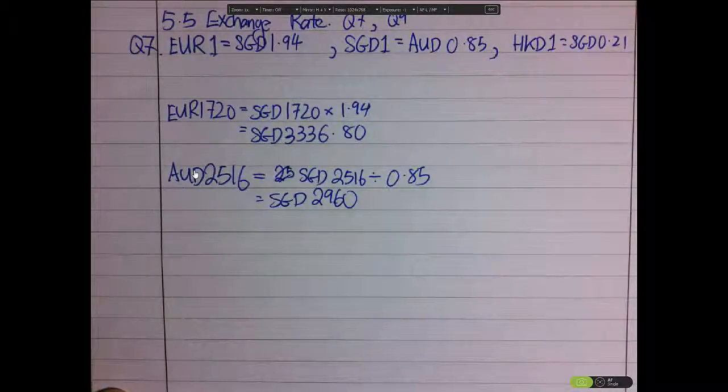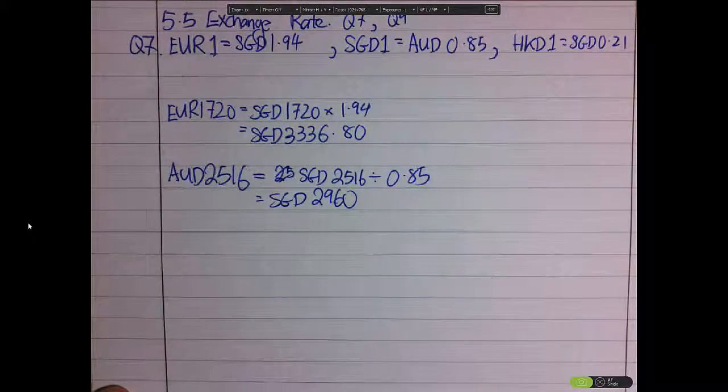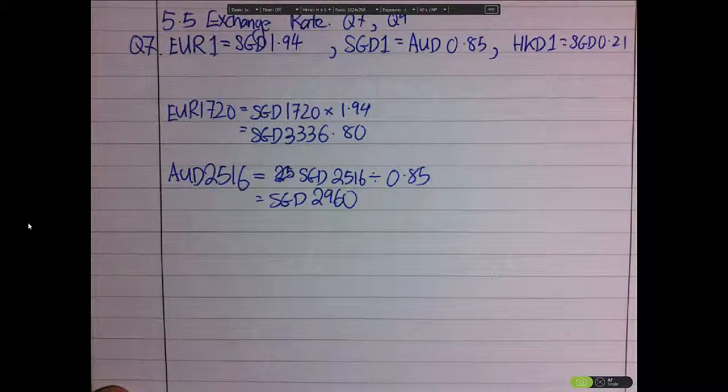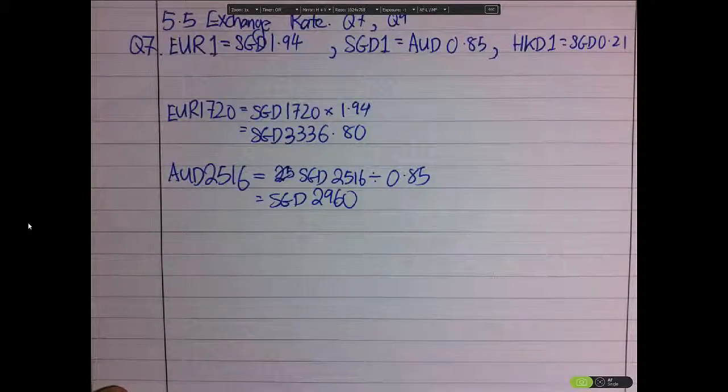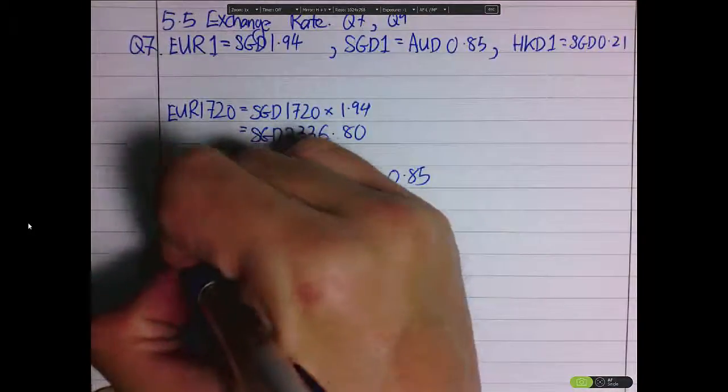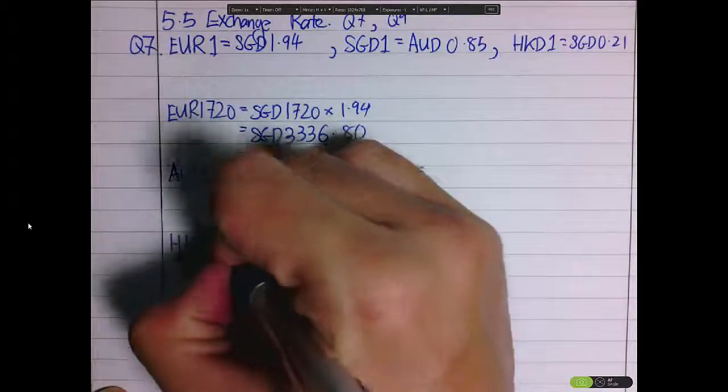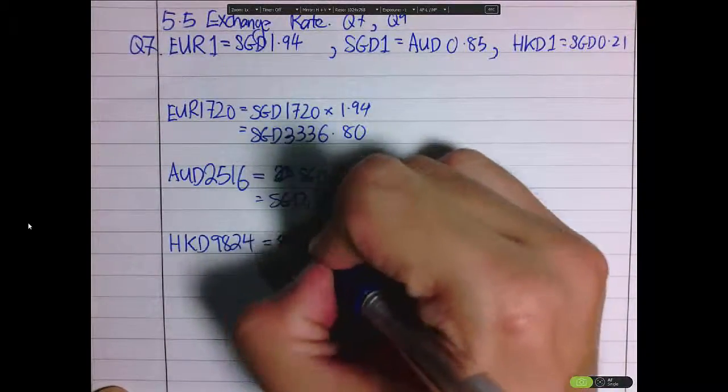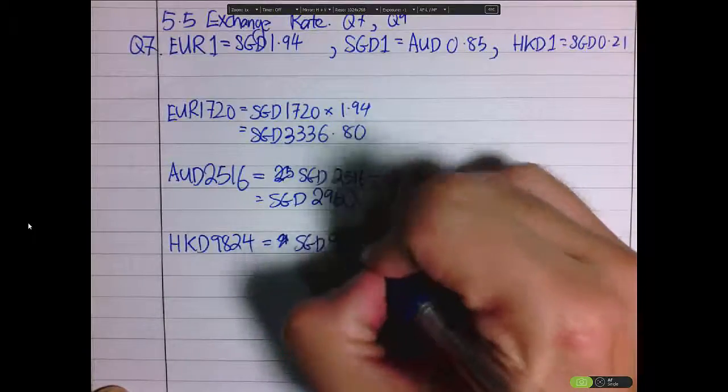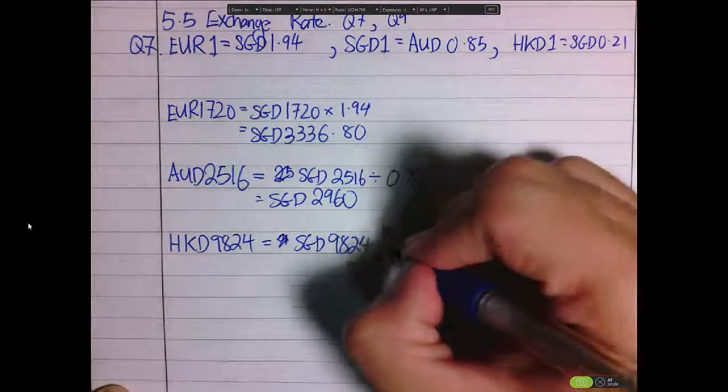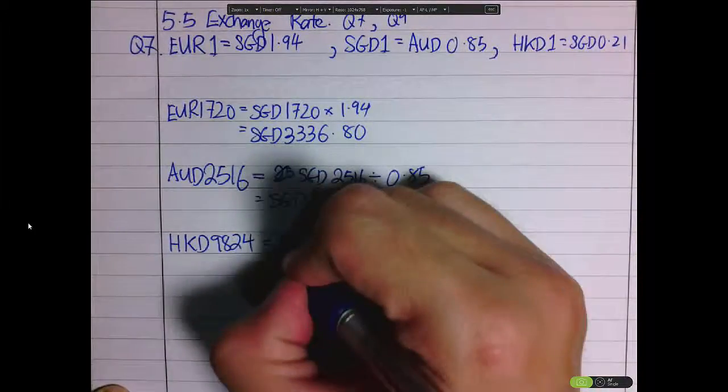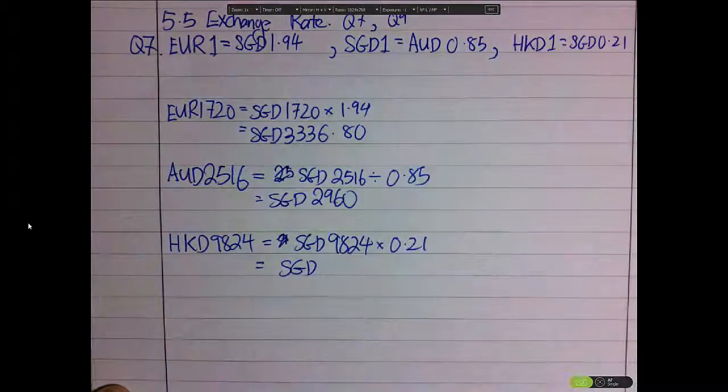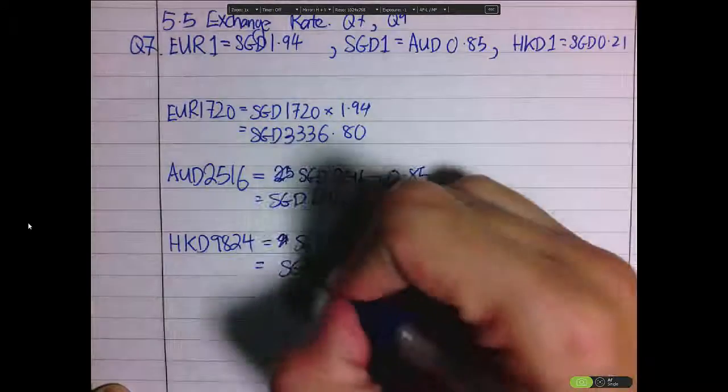And finally for the Hong Kong Dollars, I will take HKD 9824 equals to SGD 9824 multiplied by 0.21. I'll get SGD 2063.04.